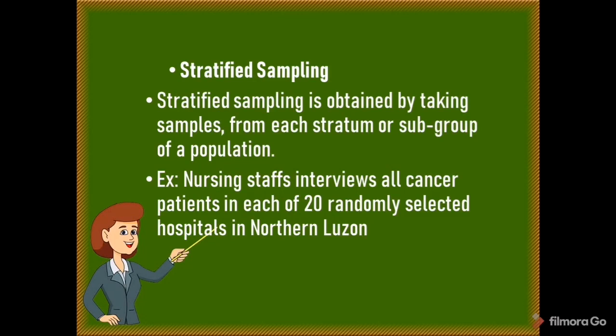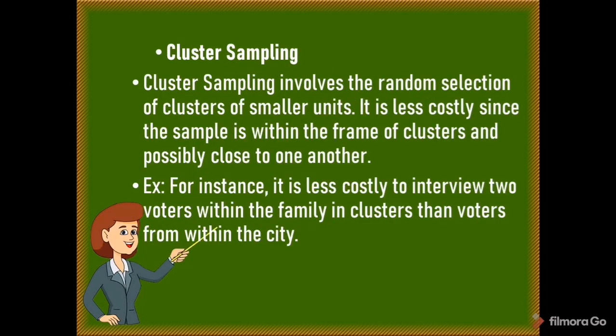The second type is stratified sampling, where samples are taken from each stratum or subgroup of a population. For example, a nursing study interviews all cancer patients in each of 20 randomly selected hospitals in Northern Luzon. The third type is cluster sampling, which involves the random selection of clusters of smaller units. It is less costly since the sample is within clusters close to one another. For instance, it is less costly to interview two voters within a family cluster than voters from across a city.